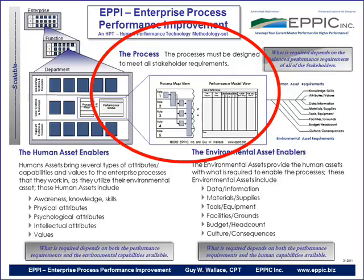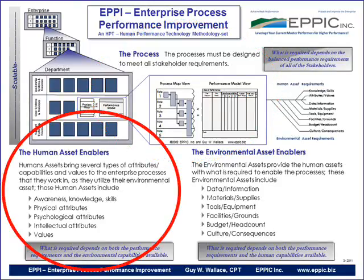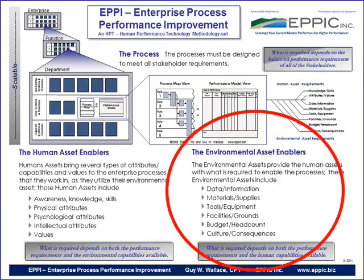The process must be designed to meet all of the stakeholder requirements in some balance if there are conflicts. There are two ways to map or model the processes, and you can see the fishbone diagram hanging off to the right. The human asset enablers include awareness, knowledge and skills, physical attributes, psychological attributes, intellectual attributes, and values. All of these enablers are dictated by the needs of the process. The same too with environmental asset enablers: data and information, materials and supplies, tools and equipment, facilities and grounds, budget and headcount, and a culture and consequence system conducive to the needs of the processes.